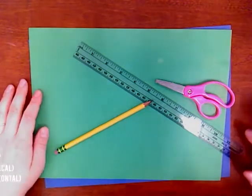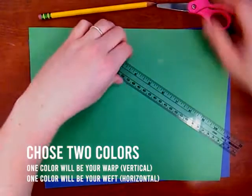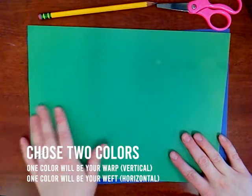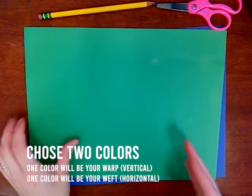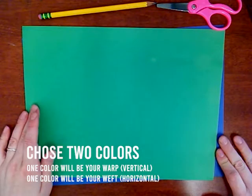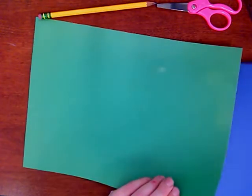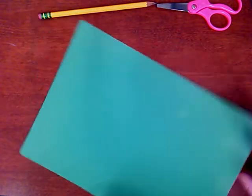The first thing that you want to do is choose one color for your warp, your vertical, and one color for your weft, the horizontal. I'm going to do green for my vertical and blue for my horizontal.